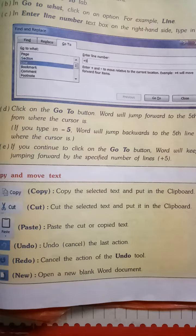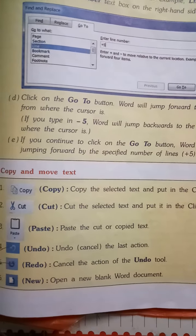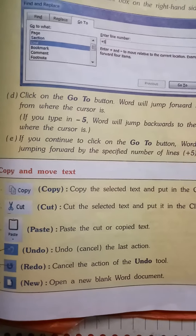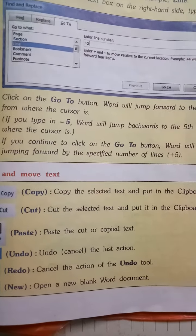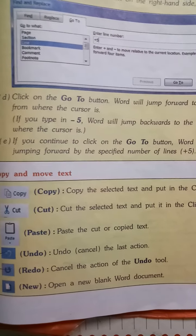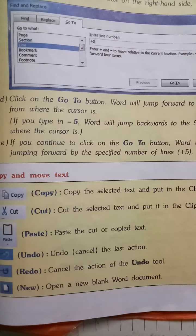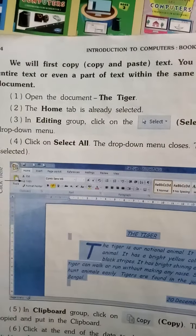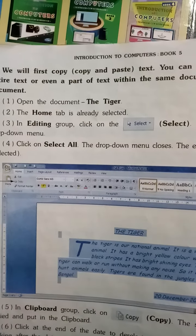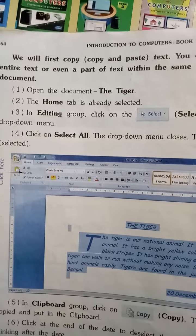Copy means you have to create another copy of the text or document. Cut means you have to move text or document from one place to another place. Let's see — we will first copy and paste text. Open the document 'The Tiger'. The Home tab is already selected.